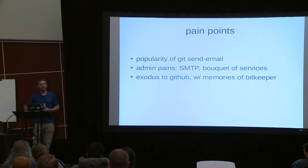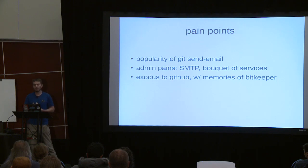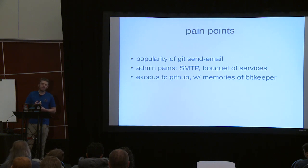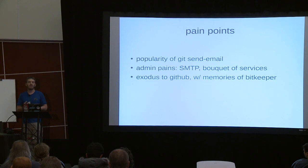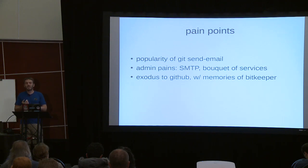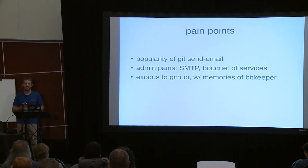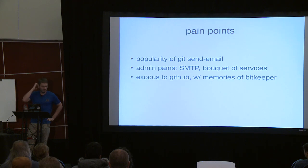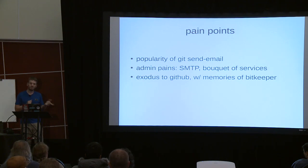There are also pain points on the admin side. In the freedesktop.org project, we run our own server infrastructure for all of graphics. The freedesktop admins are a bit annoyed with maintaining that ad-hoc bouquet of services — a Git server, a cgit web service, the patchwork instance, the mailing lists. You kind of don't want to maintain a mailing list service that massively amplifies every email sent to it in 2018. The FDO admins would very much like to get to a single integrated solution that someone else maintains.